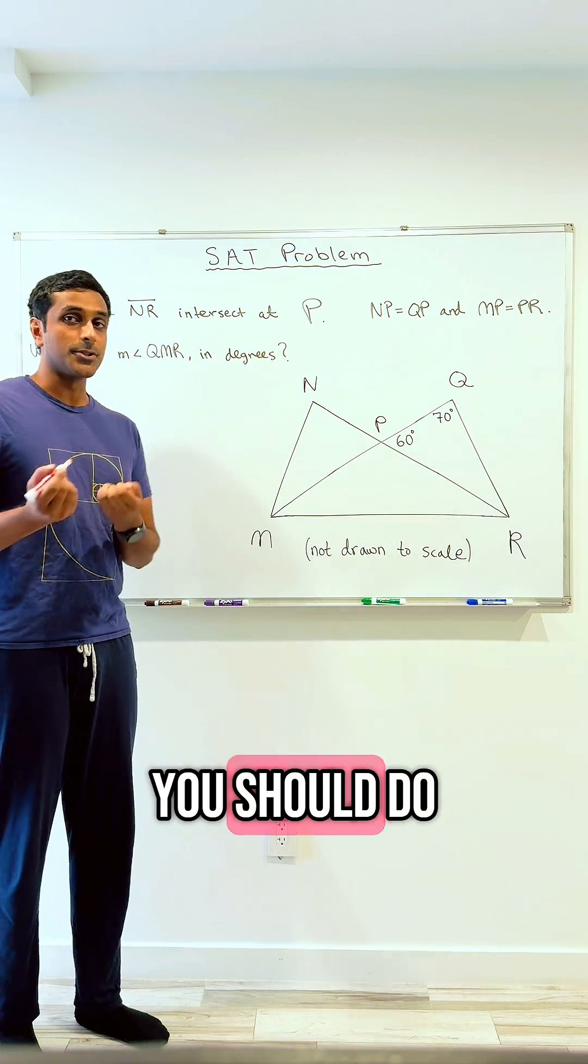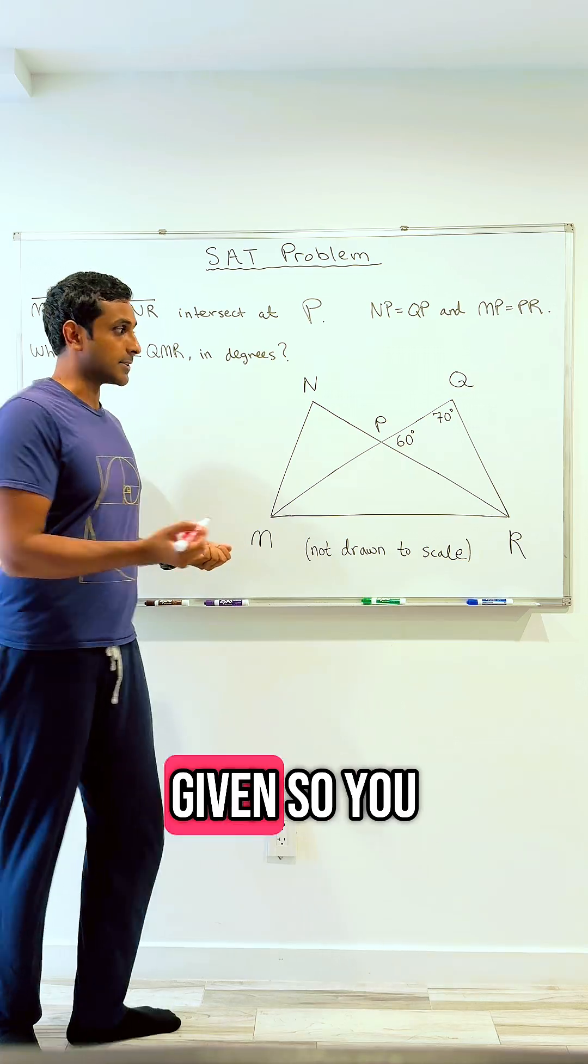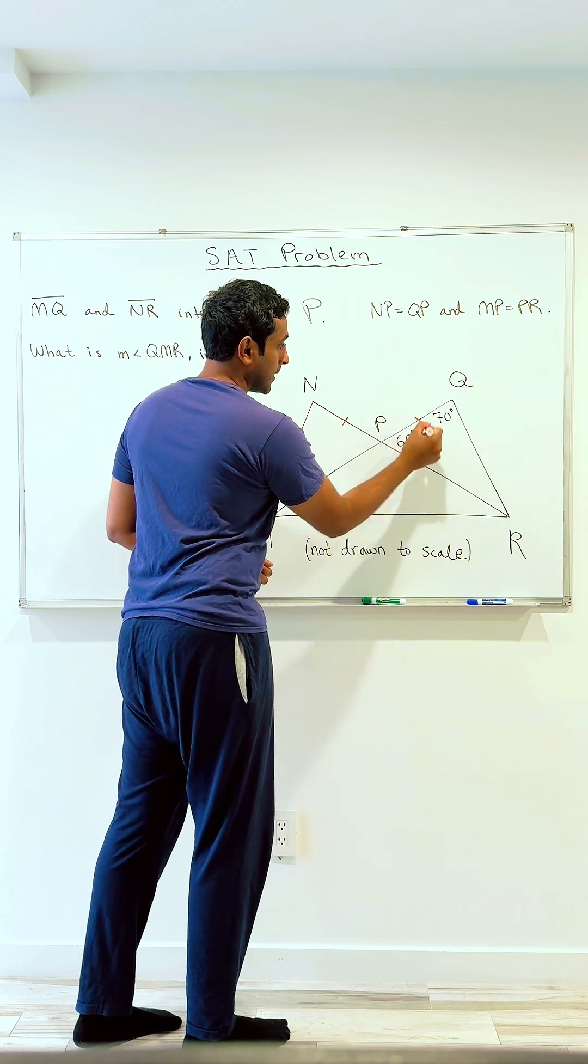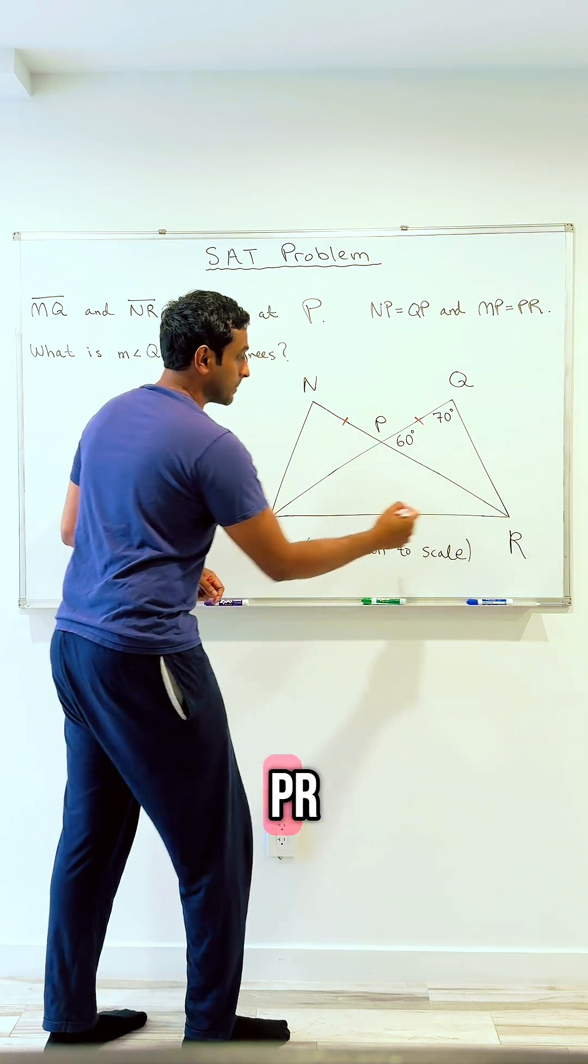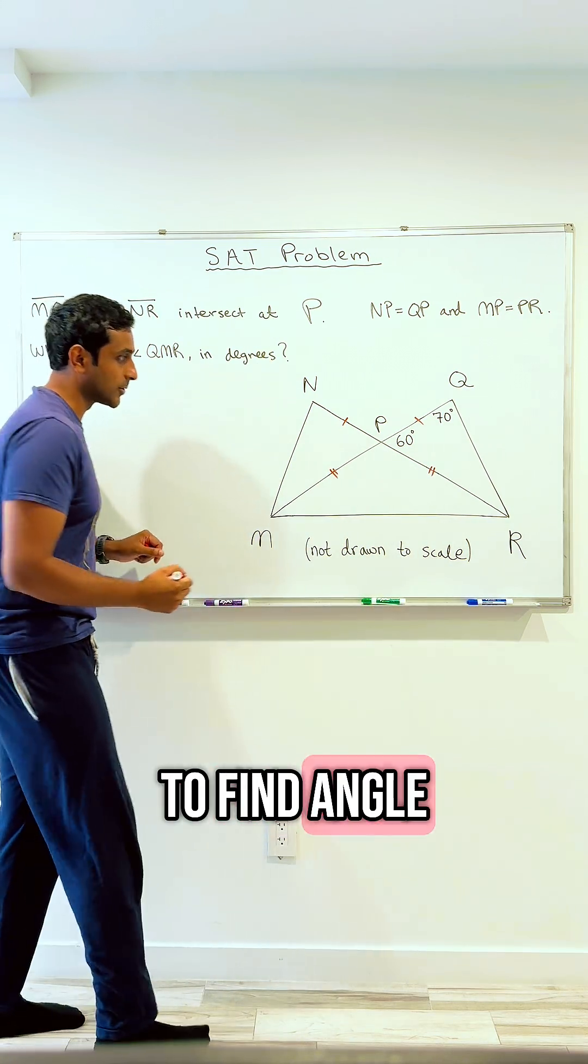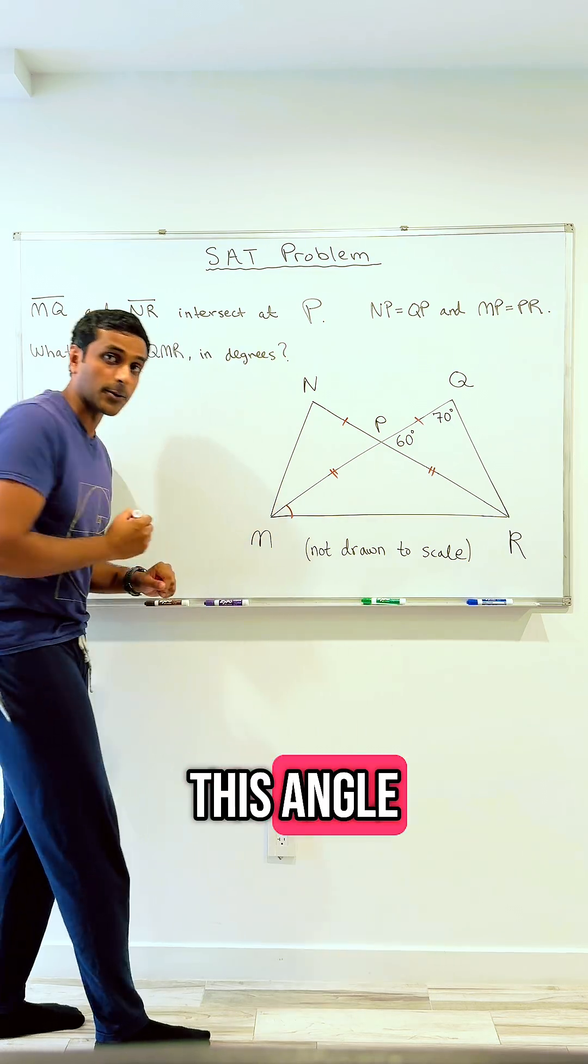Now the first thing you should do in a problem like this is to mark the given so you don't forget them. So NP is equal to QP, so this length is equal to this length, and MP is equal to PR, so this is equal to this, and we're trying to find angle QMR, which would be this angle.